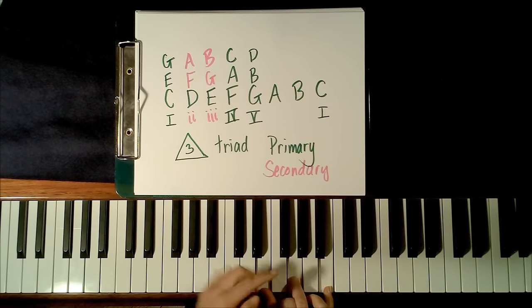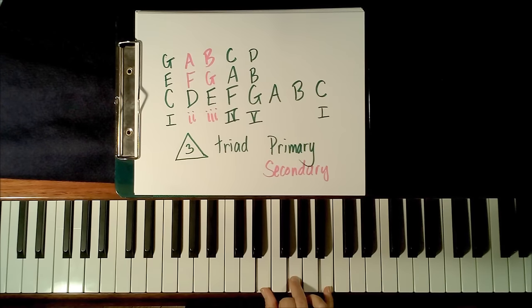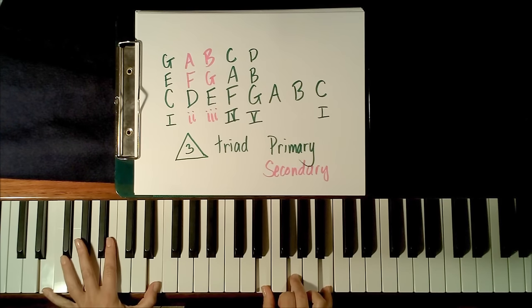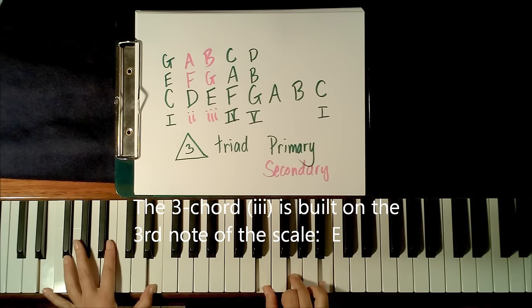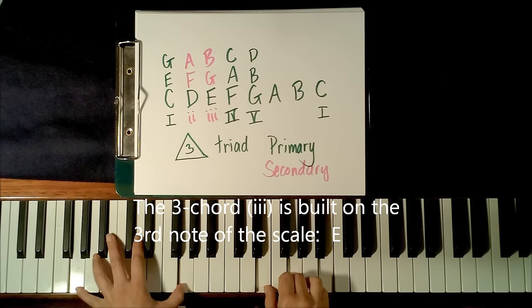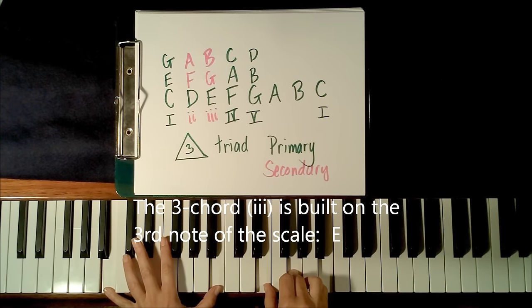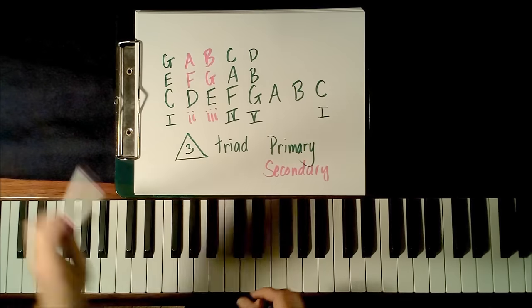And you'll notice between E and G, I've skipped over two piano keys. Will this have a major sound or a minor sound? Minor. So this is your three chord in the key of C, and we can play it over E, we can play it over G, we can play it over B. Each of them gives a slightly different texture to the chord.